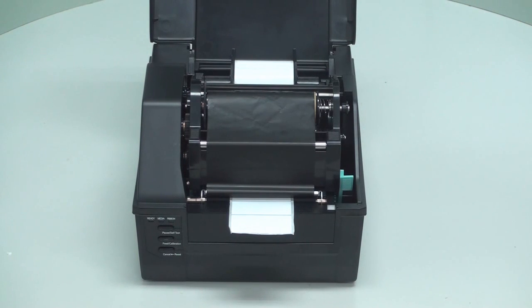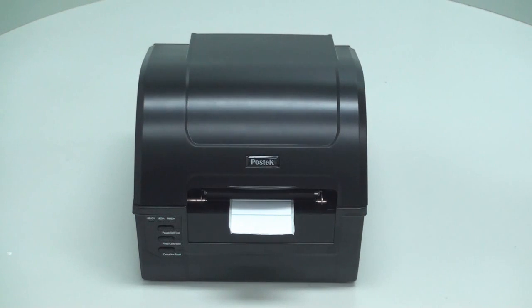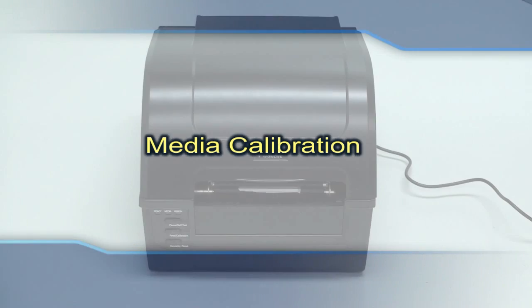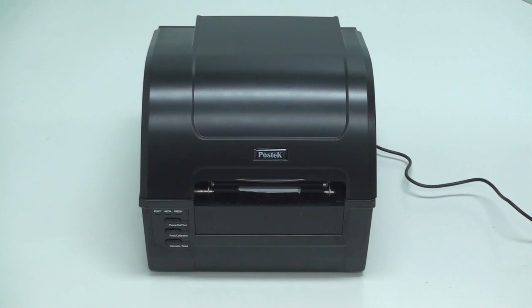This indicates the printhead module is locked in place. To ensure proper alignment of labels, the next step is to perform a media calibration. To calibrate the media, first turn the printer on.